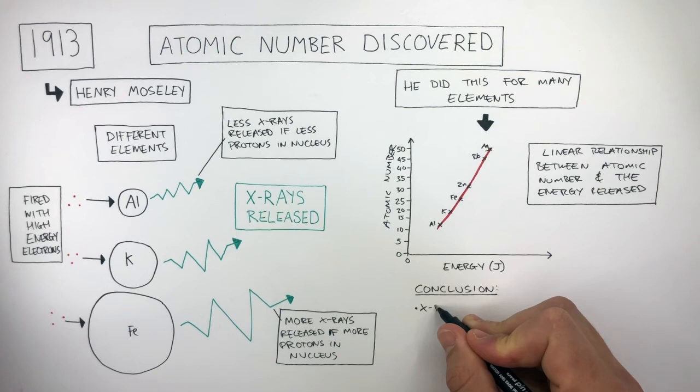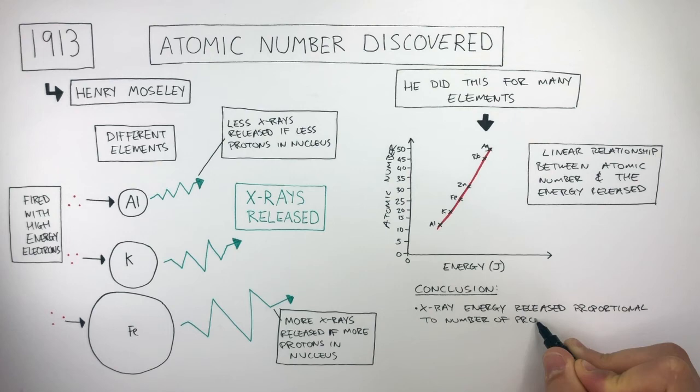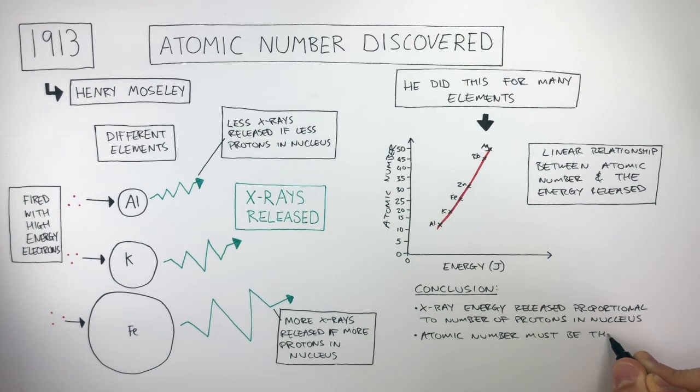The x-ray energy released is proportional to the number of protons in the nucleus. Therefore, the atomic number must be the number of protons.